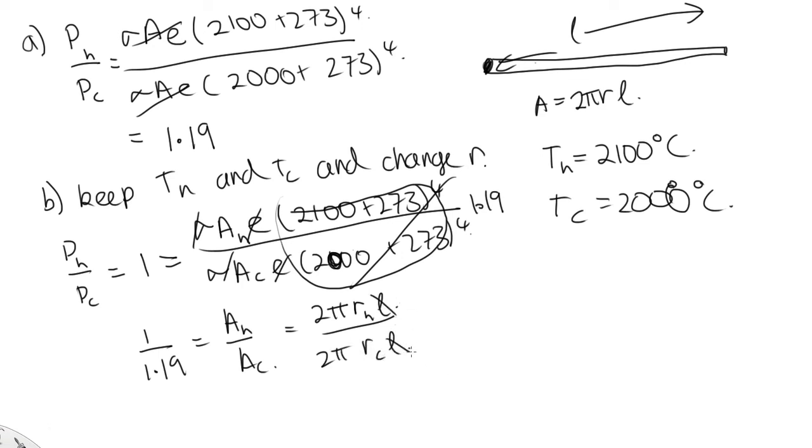Now the lengths we're saying are the same. These two π's are also the same. So we've got 1/1.19 equals the radius of the hot one over the radius of the cold one.